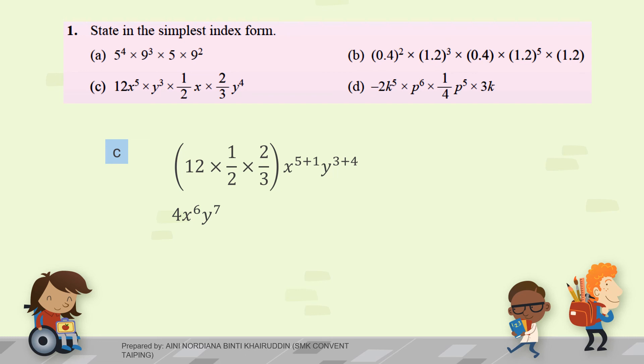Next, question D. Multiply all the coefficient. Then, K, 5 plus 1. P, 6 plus 5. So, the answer is negative 3 over 2, K to the power of 6, P to the power of 11.